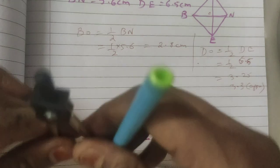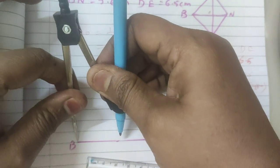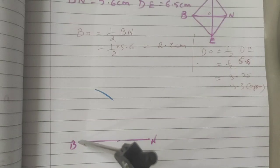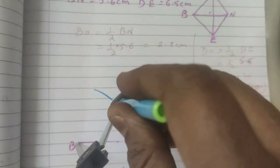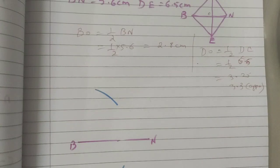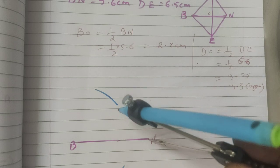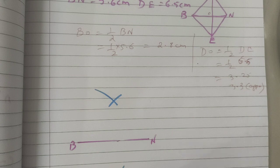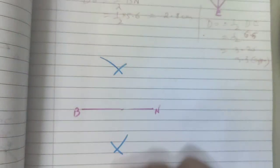Now take more than half of this measurement. Mark arcs on both the sides. Same way keep here, cut the arc. Why we are doing like this? To get the center perpendicular line.